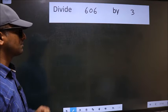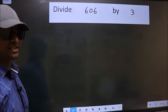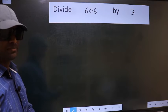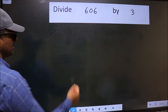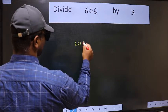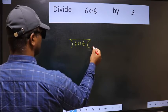Divide 606 by 3. To do this division, we should frame it in this way. 606 and 3 here.